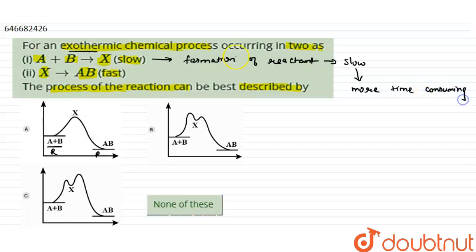And if the process is more time consuming, then activation energy will be high. Activation energy can be denoted by EA. Activation energy is increased. So the graph for first step will be higher.